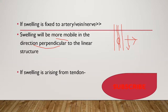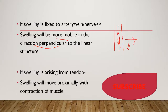If the swelling has origin from a tendon, like the biceps tendon or flexor group tendons, on inspection when you ask the patient to flex the hand — contracting the muscle — that swelling will move proximally, meaning towards the elbow. When you see the swelling moves proximally on muscle contraction, that indicates the swelling is arising from the tendon.